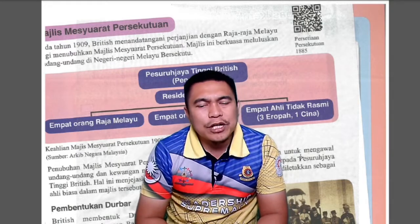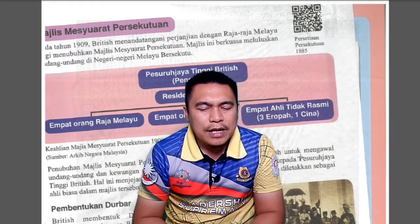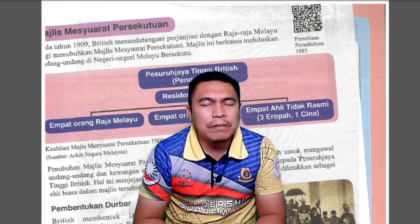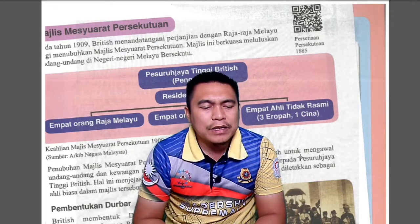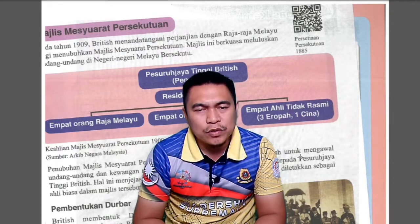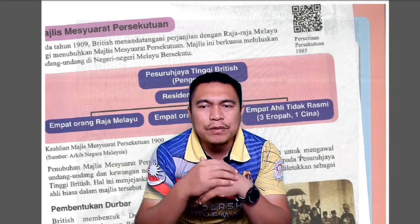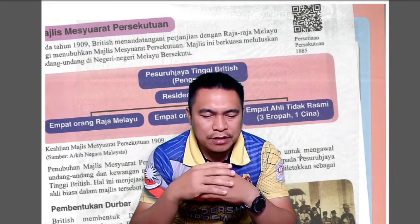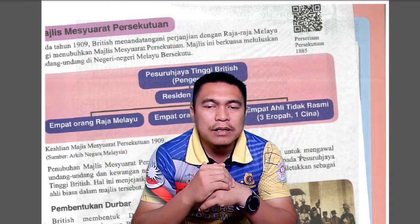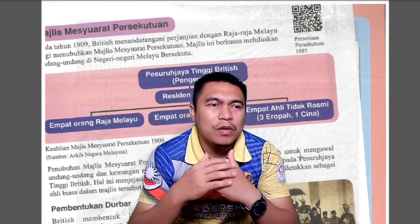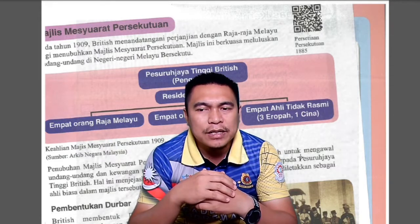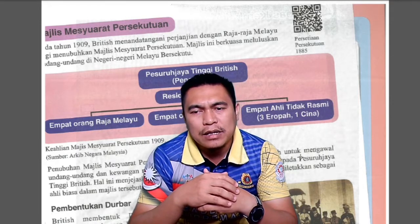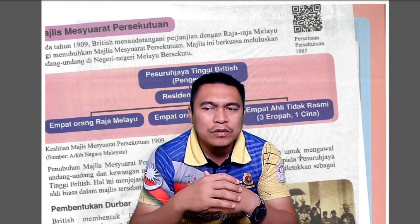Kita lihat Majlis Mesyuarat Persekutuan. Majlis Mesyuarat Persekutuan inilah yang utama ataupun menjadi nadi dalam pemerintahan pentadbiran negeri-negeri Melayu bersekutu. Yang paling atas adalah Pesuruh Jaya Tinggi sebagai pengerusi, diikuti oleh Residen General, dan di bawahnya ada 4 orang Raja Melayu, 4 orang Residen setiap negeri, dan juga 4 ahli tidak rasmi. Ahli tidak rasmi ini adalah 3 orang Eropah dan juga seorang Cina.